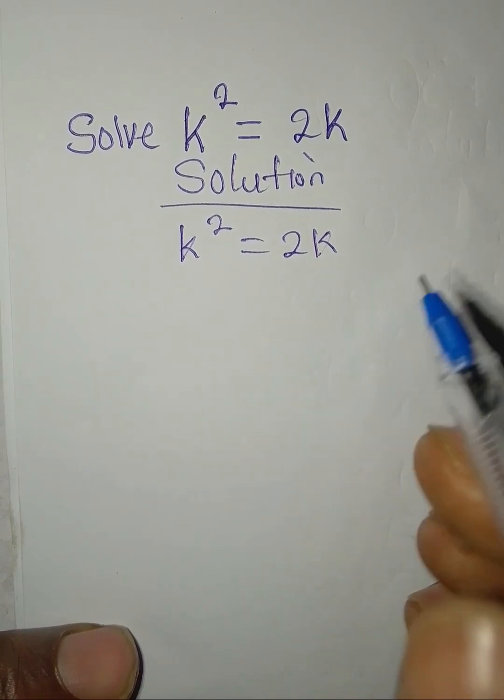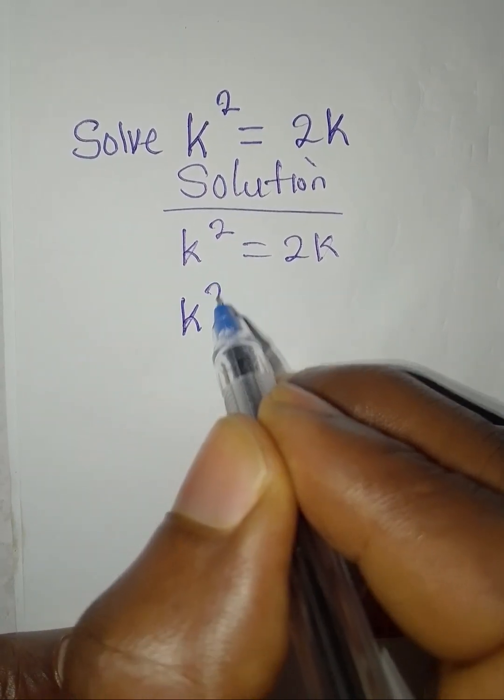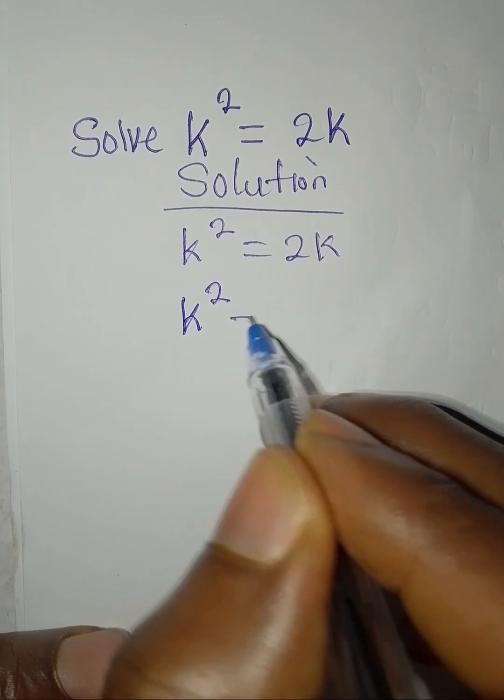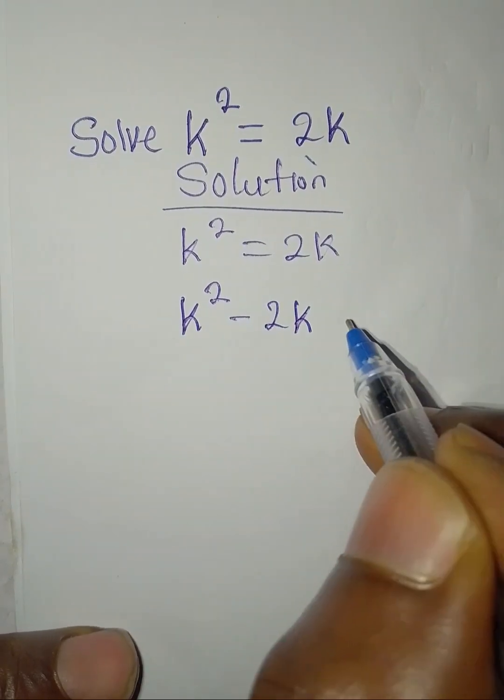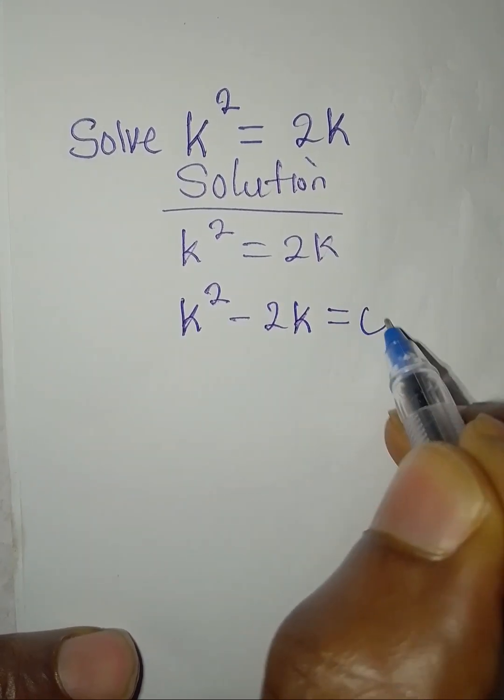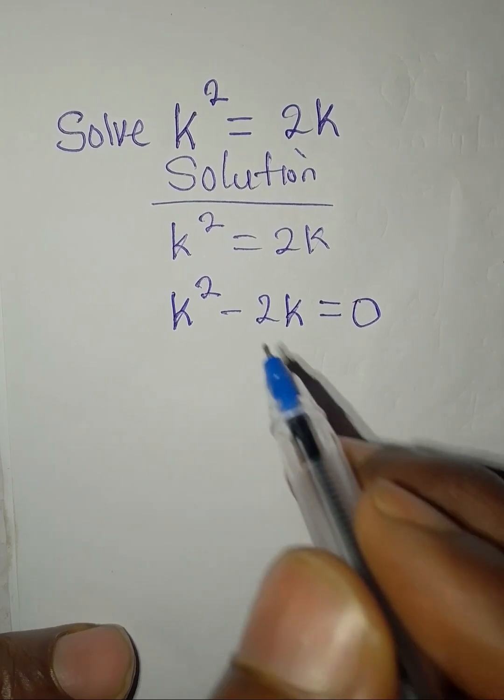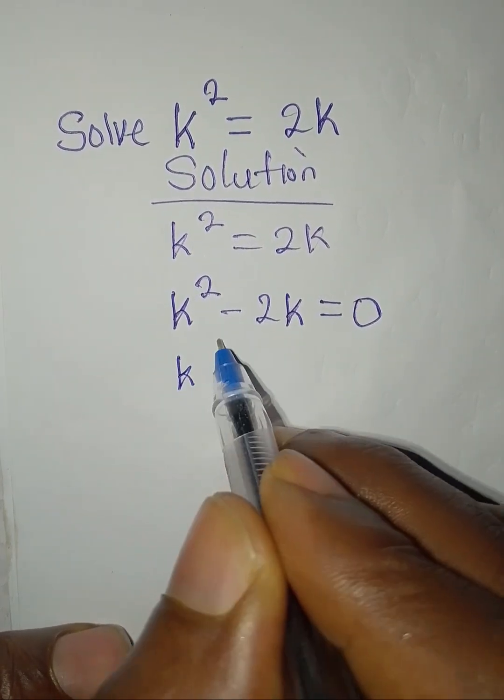So write your k² and bring this to the left to give you -2k. There's nothing on the right so we put zero there. Now something is common to these two and that is k.